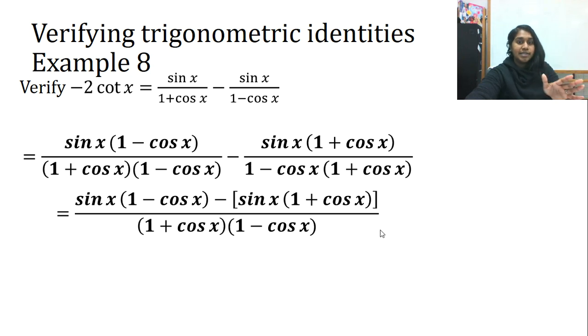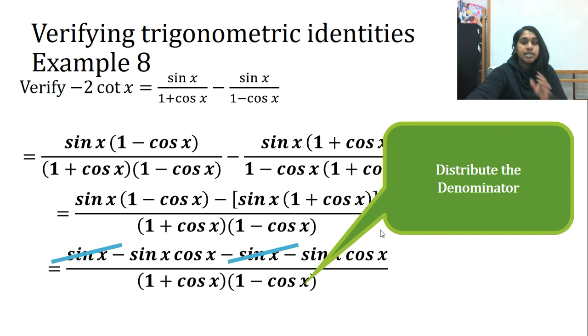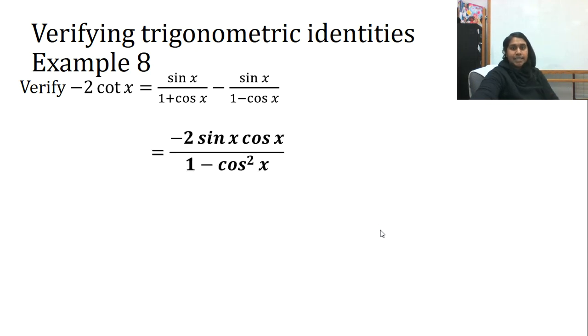I dealt with the bottom. Up top I went ahead and distributed because I see it's kind of chaos up top. So I went ahead and distributed and look at that. Now some stuff very easily does disappear. The sine and negative sine will disappear, but the sine x cosine x cannot because there's two of them. They're not opposite signs. They're both negative. So it's going to multiply instead.